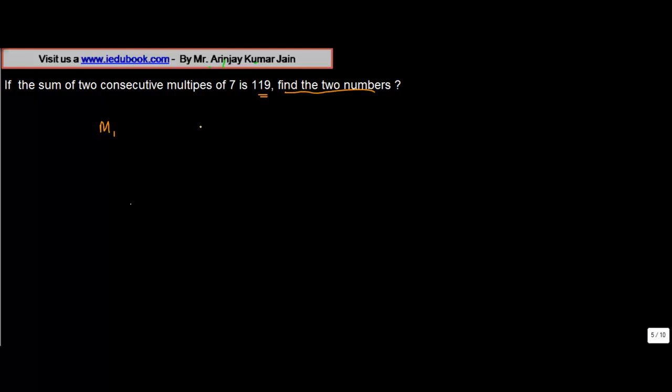Let's call them M1 and M2. The sum of these two consecutive multiples is 119. So we know that M1 and M2 are two multiples of 7, and they are consecutive multiples.